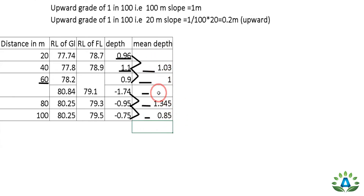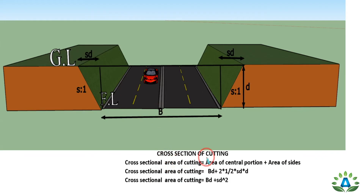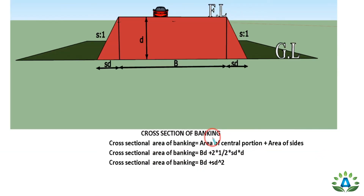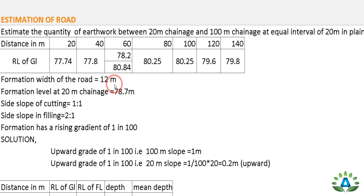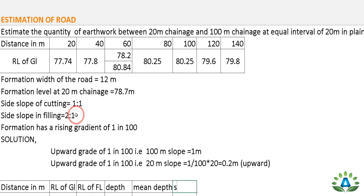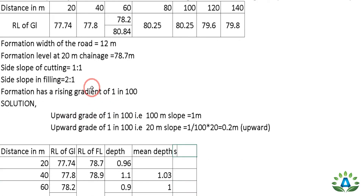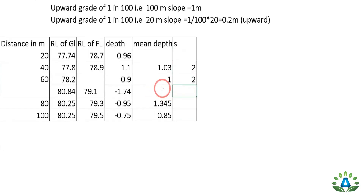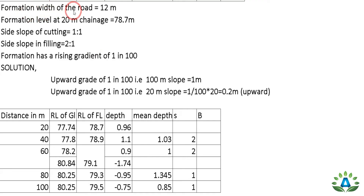The cross-sectional area formula for both cut and fill is: A = bd + sd², where bd is the central rectangular area and sd² is the area of the two triangular side portions. The formation width of the road is 12 meters, so b = 12. For fill sections, the side slope s = 2 (given as 2:1). For cut sections, the side slope s = 1 (given as 1:1).